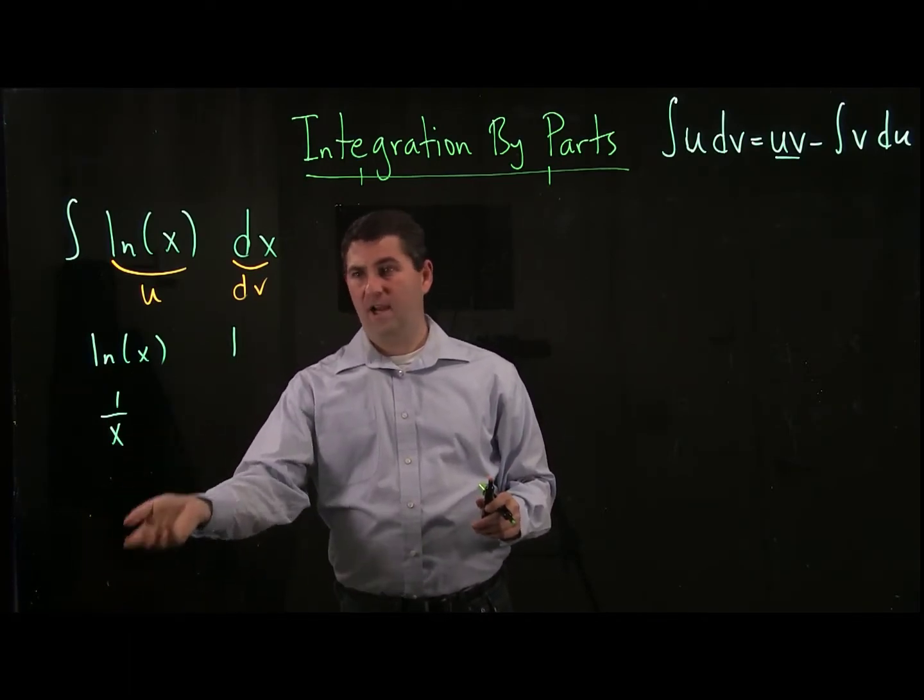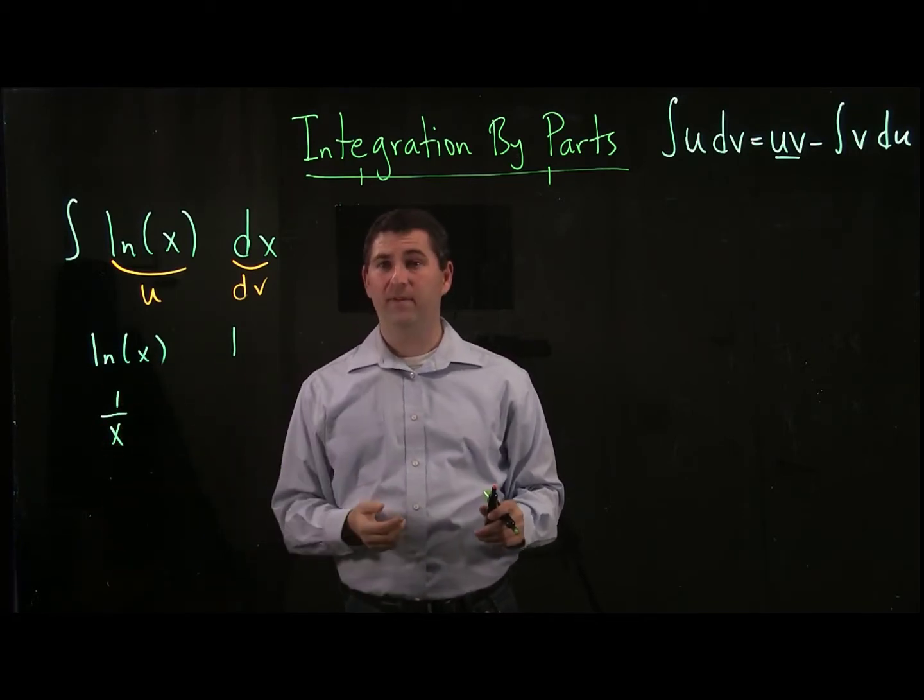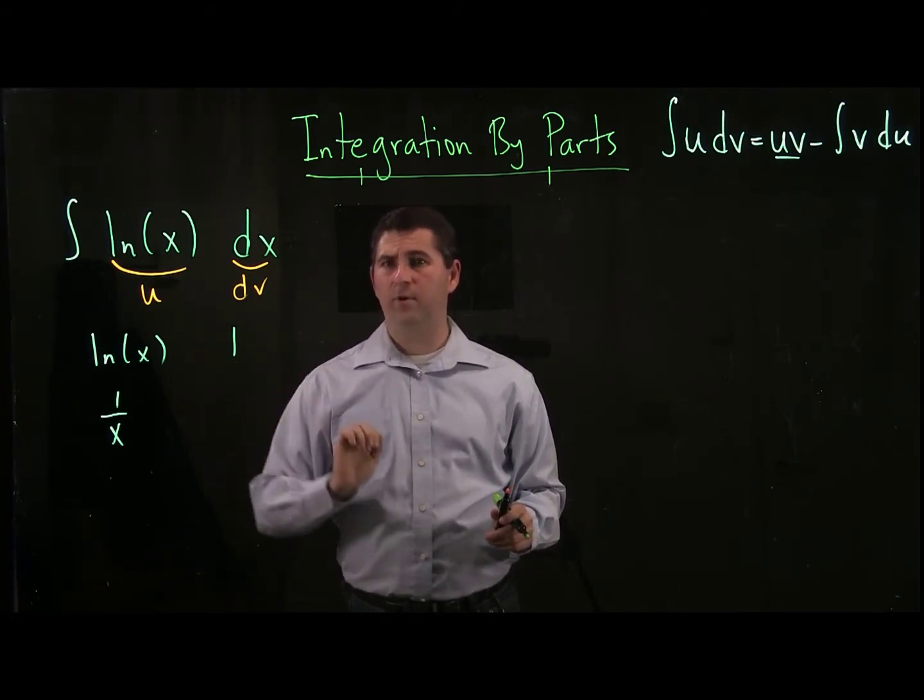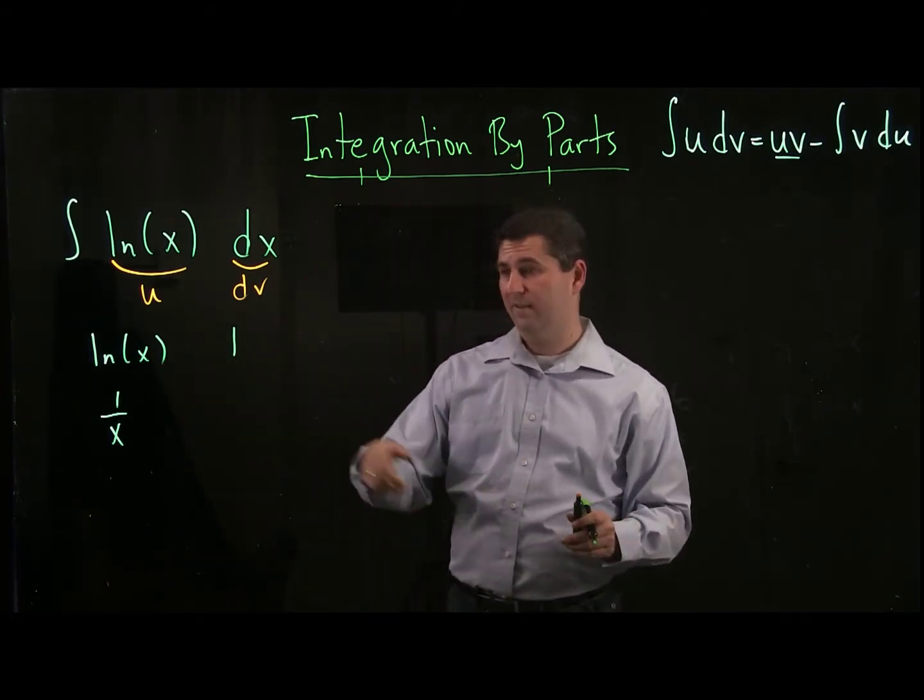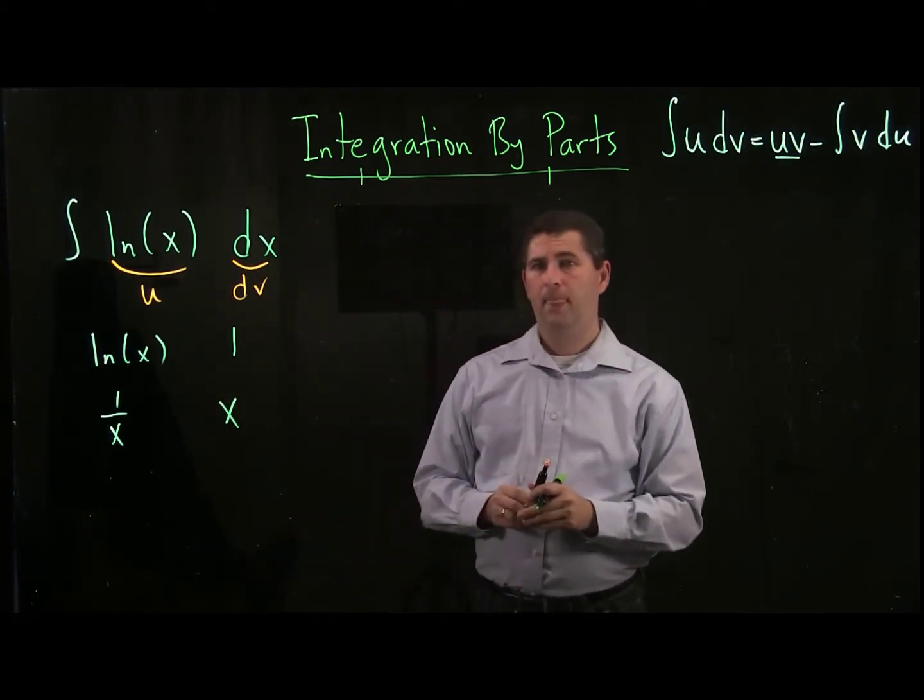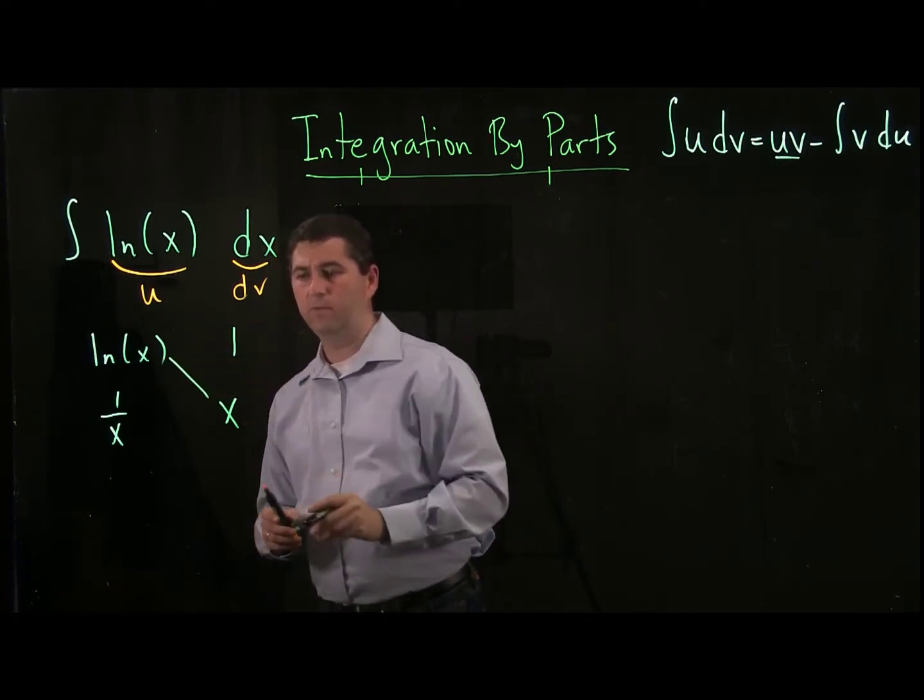We're not going to have such luck here. If I keep taking derivatives of 1 over x and its derivatives, I'm never going to get to 0. So let's just pause for a moment on the derivative side and look at the antiderivative side. If I take an antiderivative of 1, I get x.